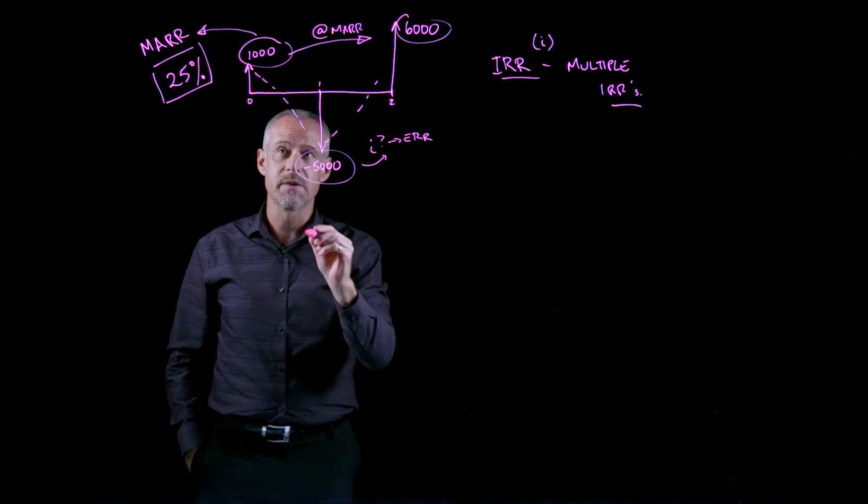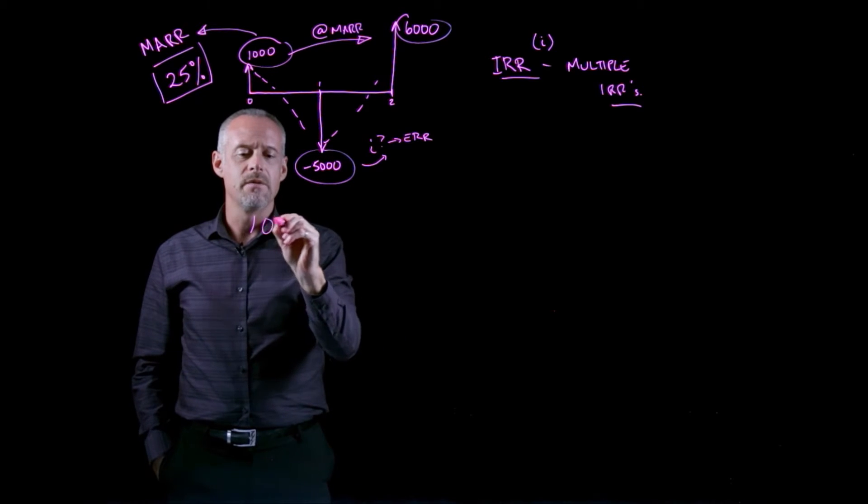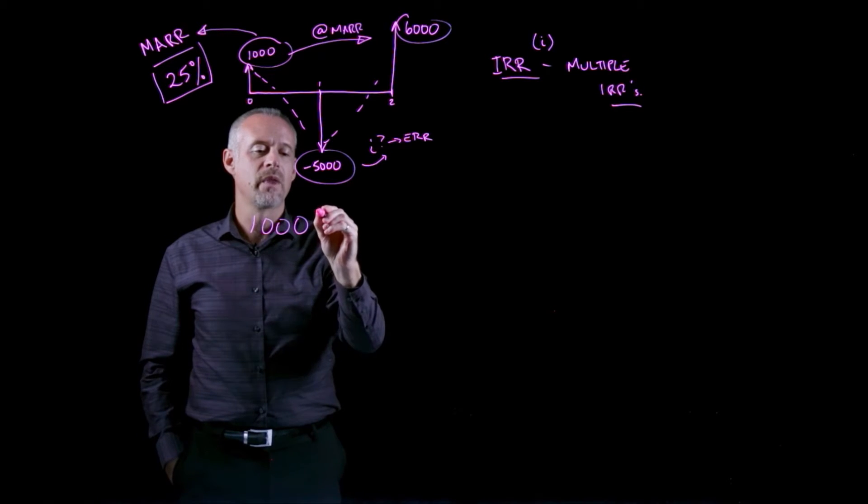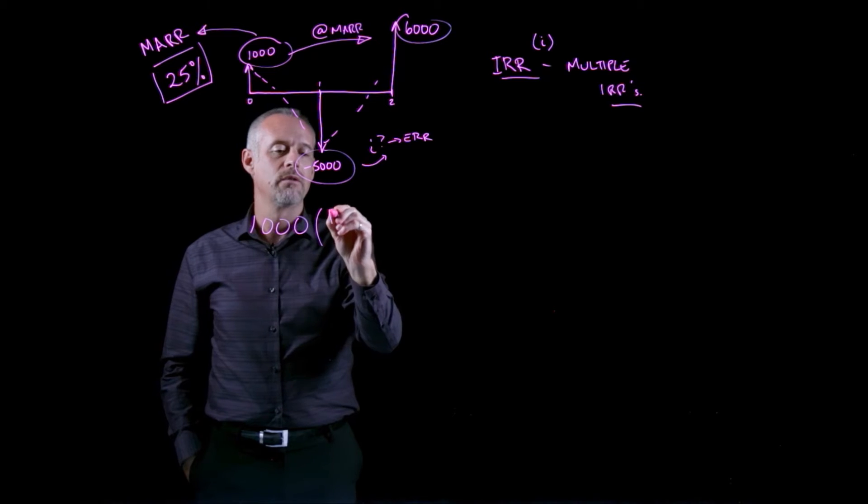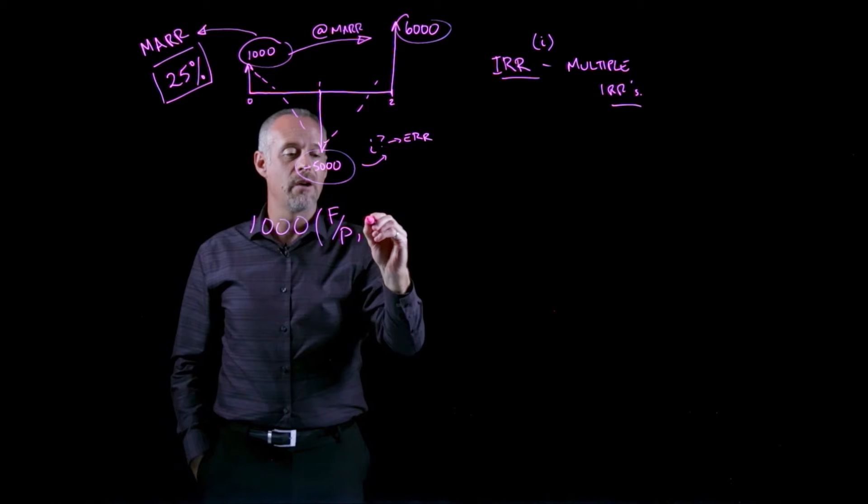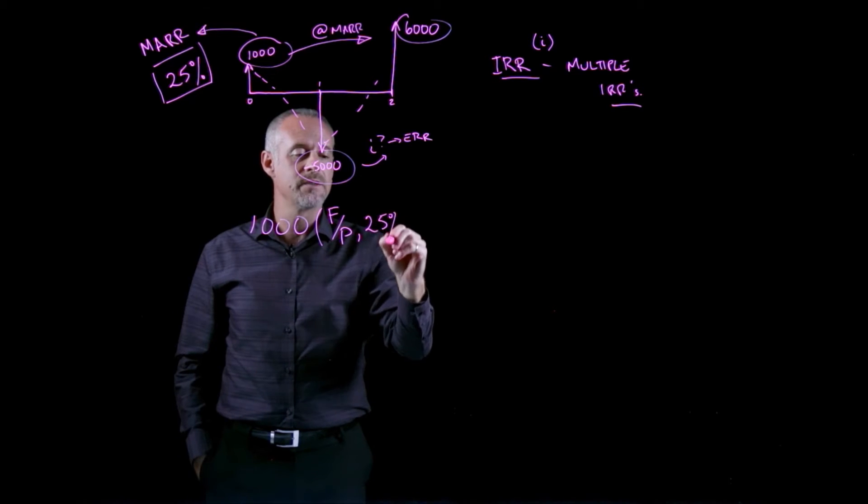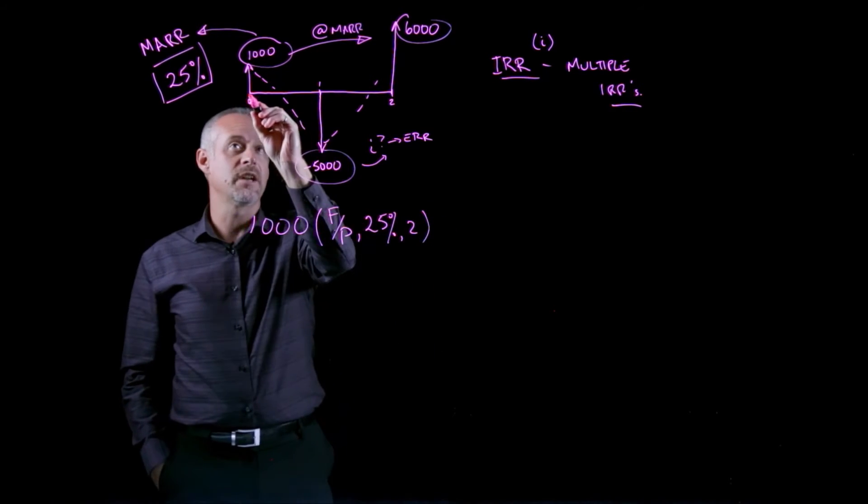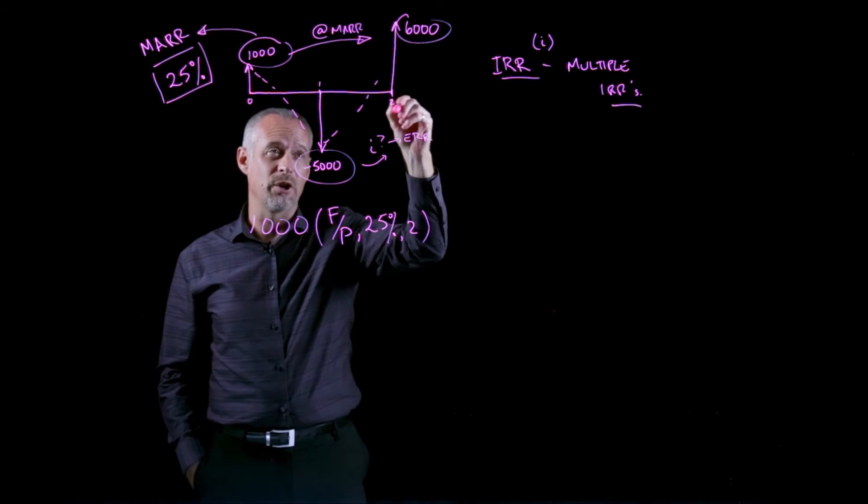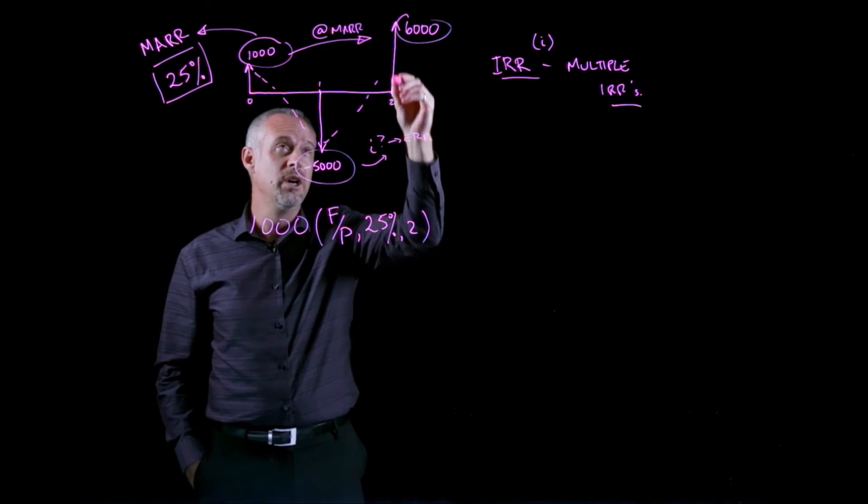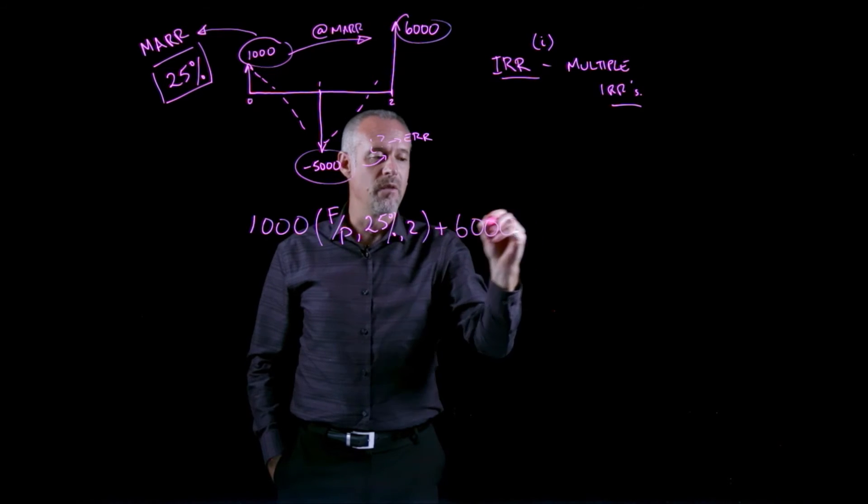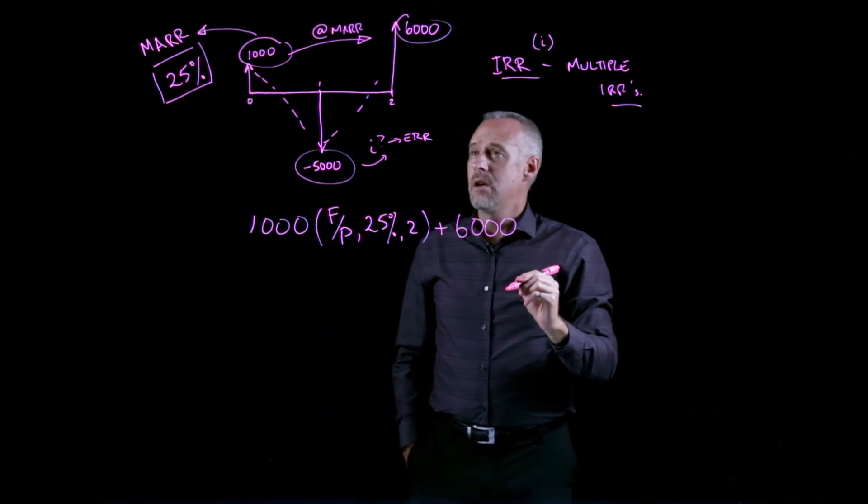For this particular problem, I can take the $1,000 positive cash flow at time t equal to 0 and move it forward using an F given P for 25% for 2 periods. The other positive disbursement occurs at time t equal to 2, so I don't need any compound interest factor. I can simply add that.